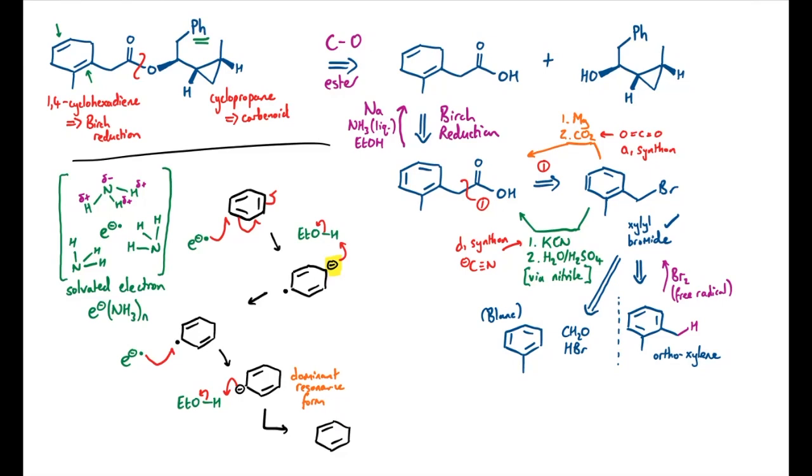And here we just want the ortho one. This sort of statistical effect is one of the reasons why lots of ortho substituted benzene rings are available from commercial sources as well as the para ones. They often just get made and separated while trying to make other things.